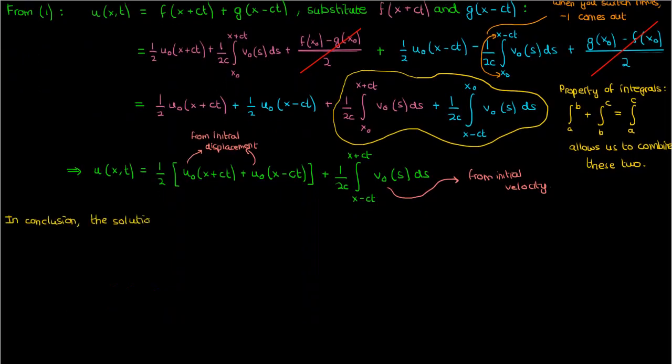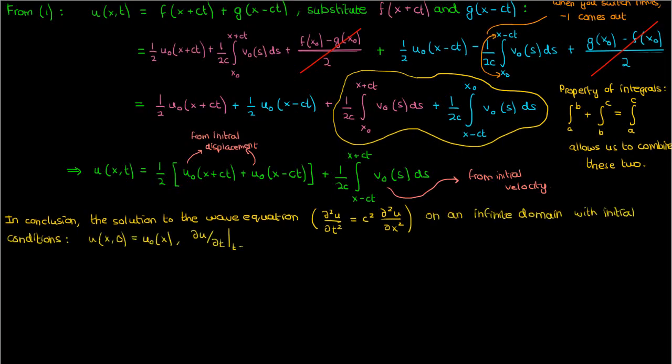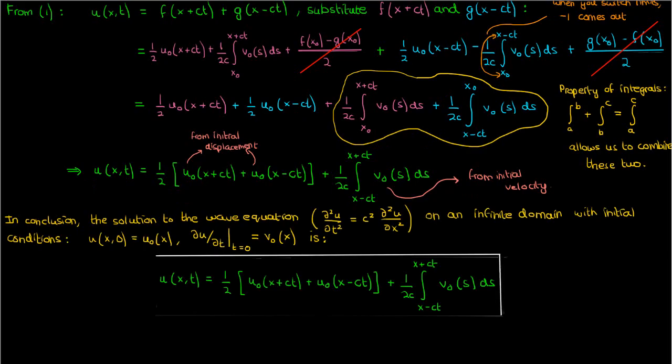So, in conclusion, the solution to the wave equation on an infinite domain with the following initial conditions is given by this function u of x and t. This function is called the D'Alembert solution to the wave equation.